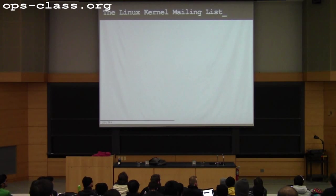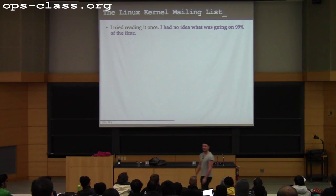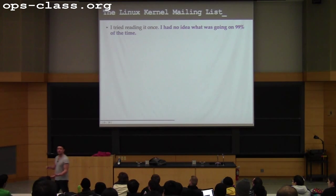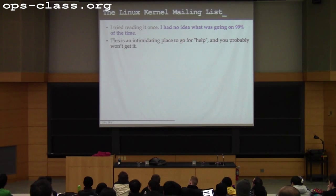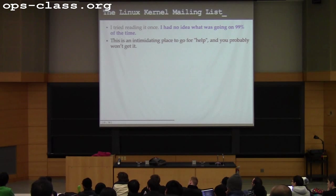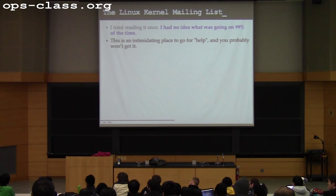The Linux kernel maintains a mailing list. I tried reading it one summer for fun — it's terrible. It's like 99% of the time you have no idea what's going on. This was 15 years ago I tried to do this, and with all the time I've spent thinking about computer systems since then, I think I might have moved that number down to 98%. The discussions are about really low-level features and subsystems that a lot of people don't even know exist. This is not where you go if you want help with 'I can't get Firefox to open.'